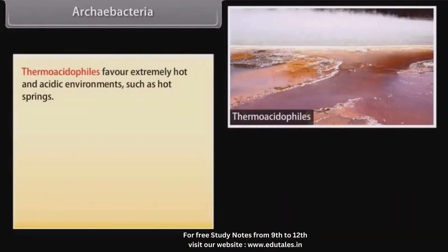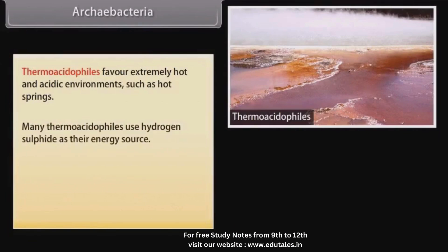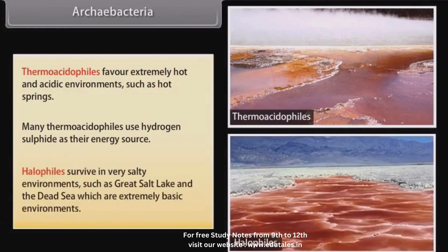Thermoacidophiles favor extremely hot and acidic environments, such as hot springs. Many thermoacidophiles use hydrogen sulfide as their energy source. Halophiles survive in very salty environments, such as the Great Salt Lake and the Dead Sea, which are extremely basic environments.